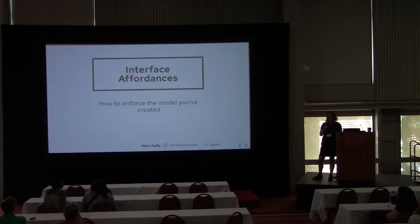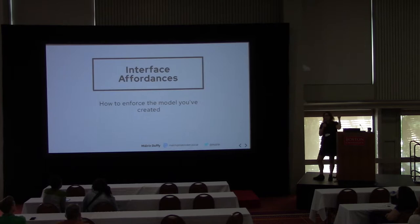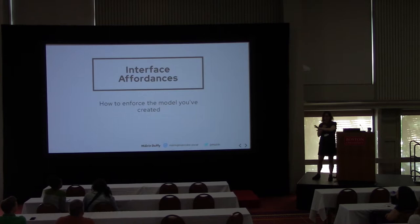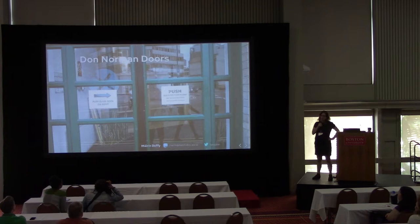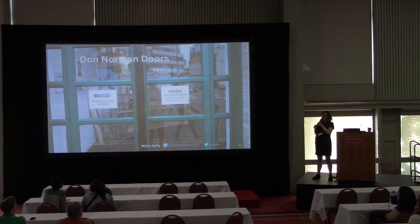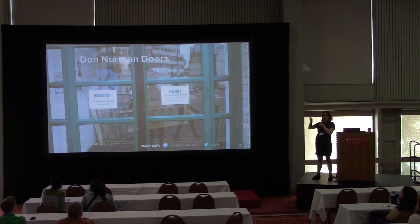This is the last section. We've talked through the high-level abstract: what am I designing for, what are my users doing, what is the domain space? We push that into building out a UX model to support it. Once you have your model, how do you actually enforce that on screen? This is the surface-level details — interface affordances. These are called Don Norman doors: a door that you can't even tell is a door, where somebody has to make signs saying 'push here to open.' You don't want to build Don Norman doors in your interface.